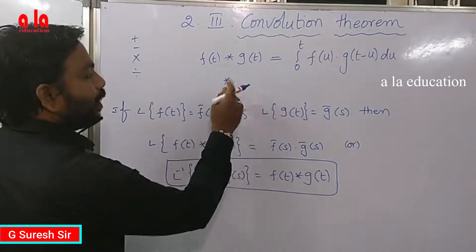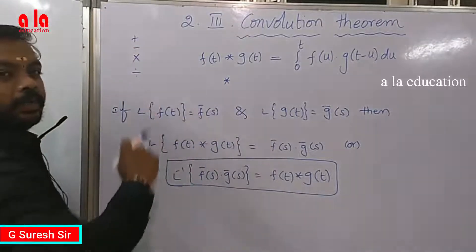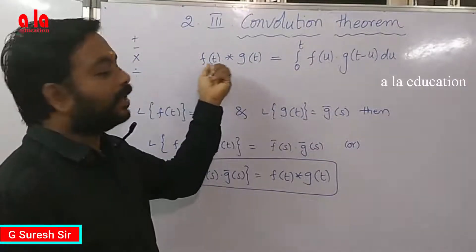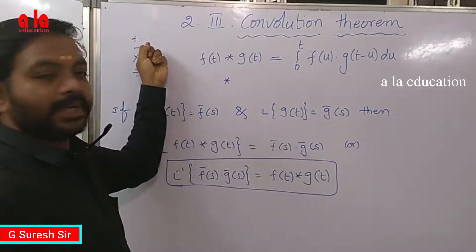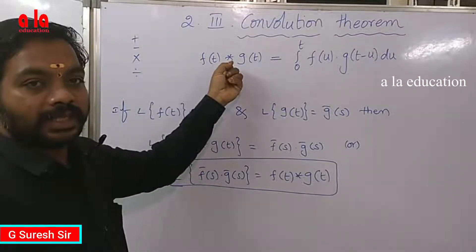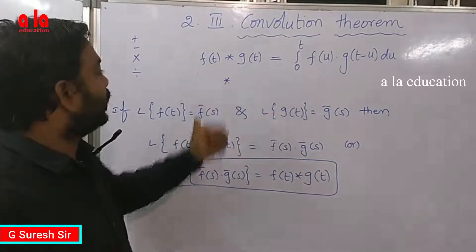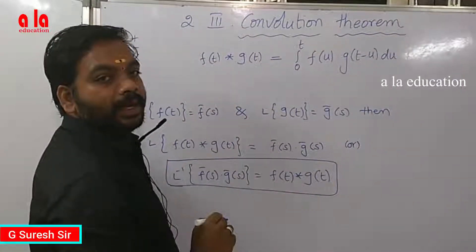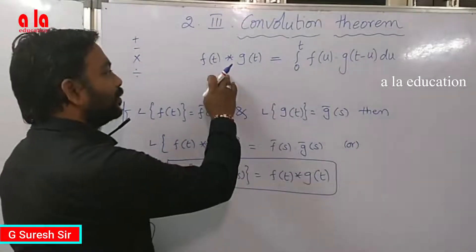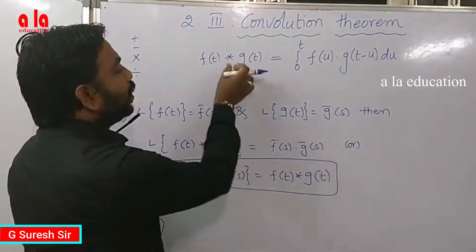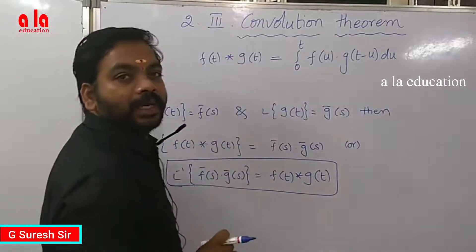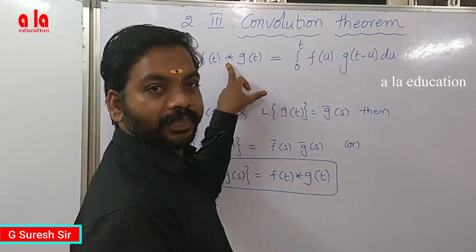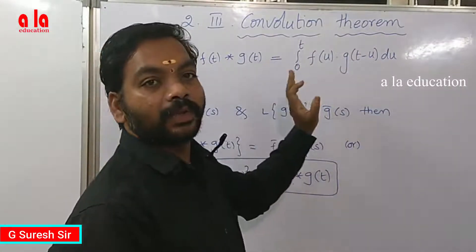The symbol for convolution product is star. If additionally two functions are added or subtracted, and we multiply the product — this is the convolution product. Two functions added together form the convolution product.